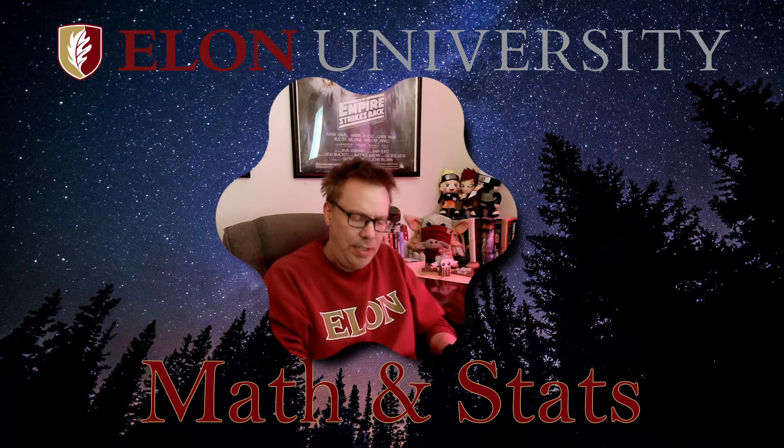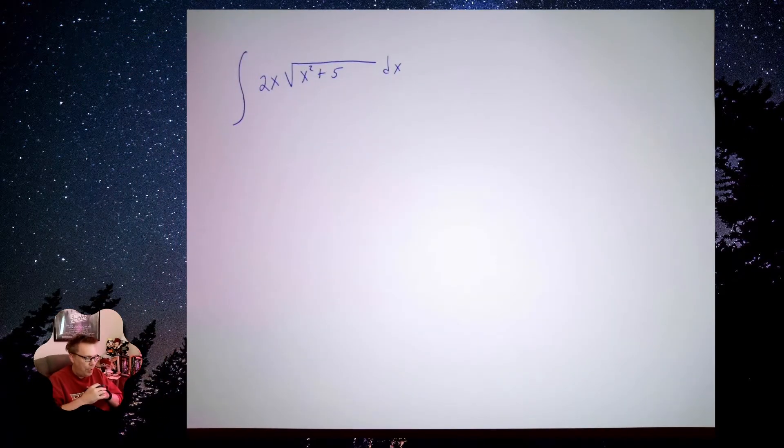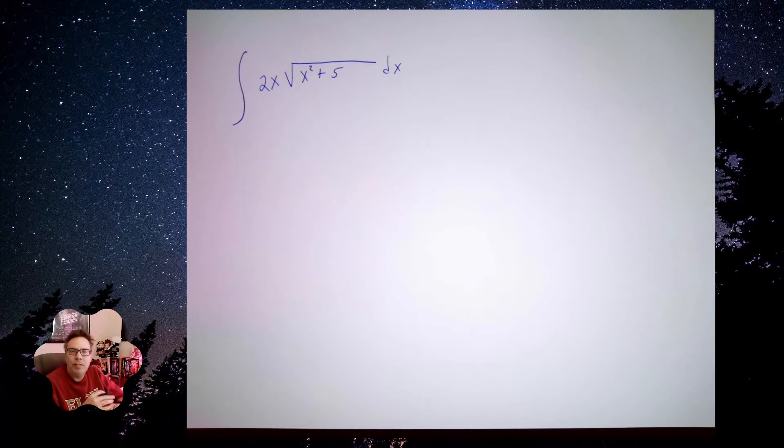So here's the idea. I have an integrand where it basically looks like a product, but what I want you to notice is that inside the square root, the radicand, there's a relationship between x squared plus 5 and 2x.